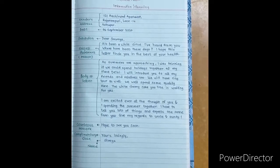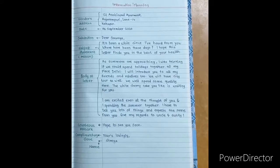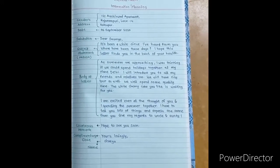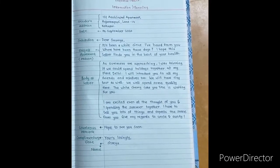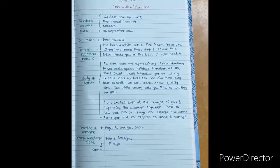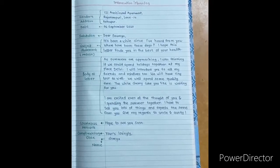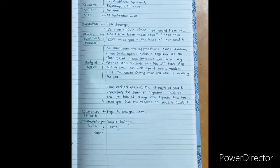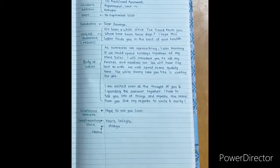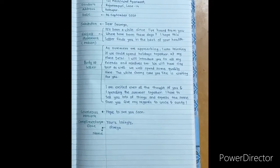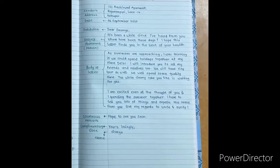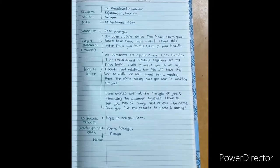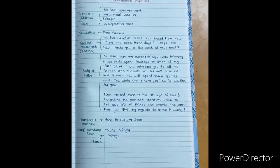We will see over here: 121 Ashirvad Apartment, Rajarampuri Lane Number 14, Kolhapur. Date is 6th of September 2020. Salutation is 'Dear Somya.' Now we are very familiar with the person whom we are writing a letter, so I have written 'Dear Somya.' Somya is a friend who is writing a letter. Then next one, the subject or body of the letter: It's been a while since I have heard about you. Where have you been these days? I hope this letter finds you in the best of your health. As summers are approaching, I was thinking if we could spend holidays together at my place Delhi. I will introduce you to all my friends and relatives too. We will have a city tour as well. We will spend some quality time.